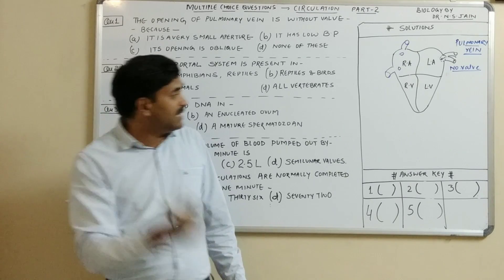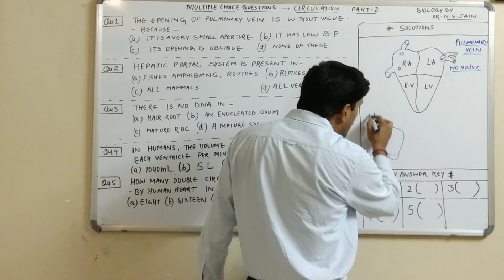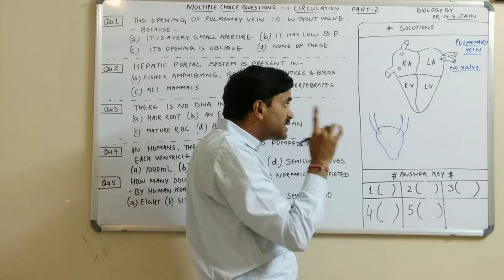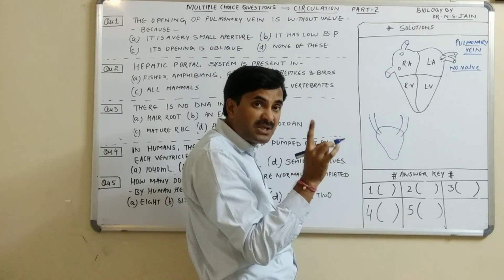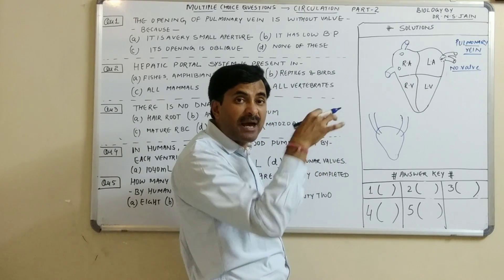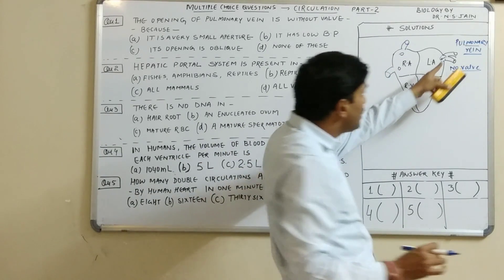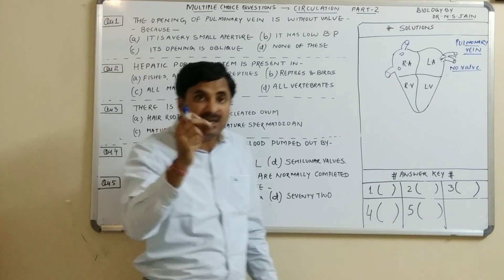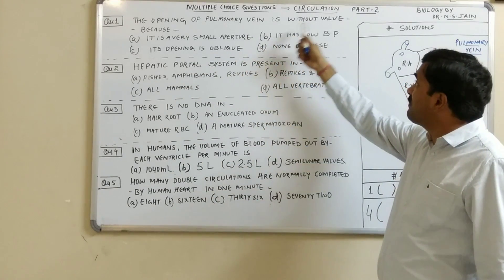Similarly, in the excretory system, when we study the urinary bladder, the ureters open into it but are obliquely placed, which prevents the backflow of urine into the ureters. In exactly the same manner, the opening of the pulmonary vein is oblique, which prevents the backflow of blood.